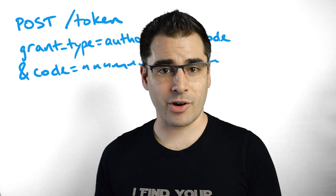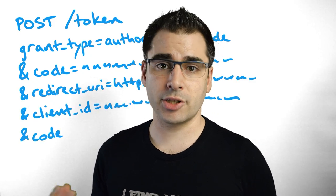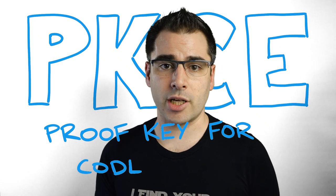So what do we do instead? In order to complete an OAuth exchange with a public client, we have to do things a little bit differently. We can't ship a secret down to the application when it's downloaded. So instead, when the application is ready to start an OAuth flow, it generates a secret on the fly for that particular exchange. It uses that secret when it initiates the OAuth flow, and then the OAuth server requires that secret when the authorization code is exchanged for the access token. This technique is called PKCE, or Proof Key for Code Exchange, and it's an extension to OAuth developed specifically for doing OAuth in public clients.